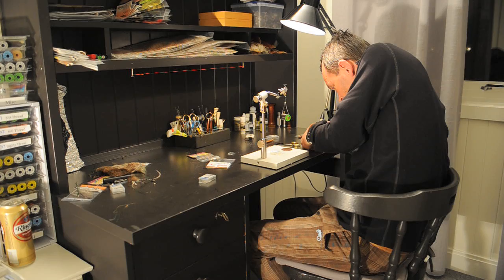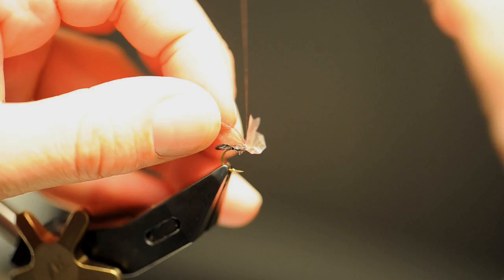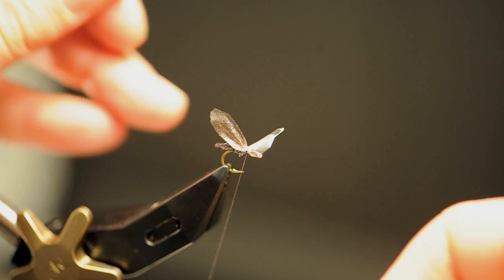These wings are clear, but I like to give them a hint of color with a grey waterproof marker. Tie them in on top of the fly so that they extend a little behind the end of the body.